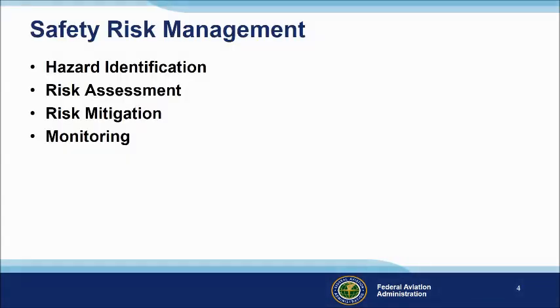As we saw in the video, SRM is a three-step process beginning with hazard identification — what conditions or circumstances could negatively affect your flight? Risk assessment: how likely are the identified hazards to cause a problem, and how severe will the consequences be if they do? Risk mitigation: what can I do to reduce the risks to an acceptable level? Finally, we need to constantly monitor the hazards and risks associated with our flight to make sure that the identified risks remain at an acceptable level.